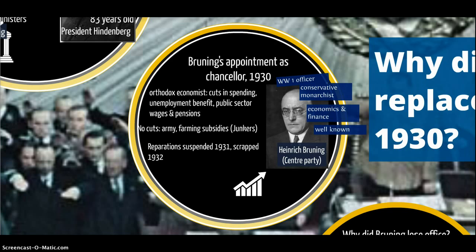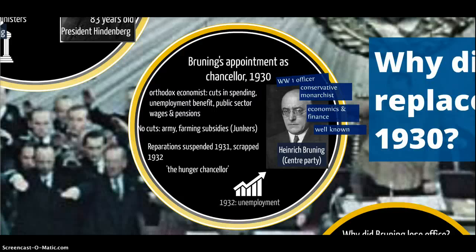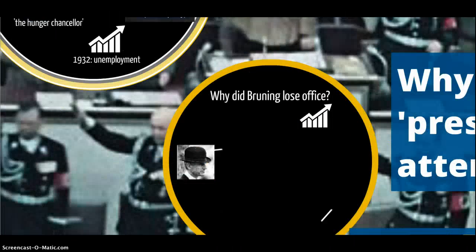Brüning did succeed in getting reparations suspended in 1931 and even scrapped in 1932. You might think that was incredible, but in the context of the economic chaos of the Great Depression, it's not that significant. He becomes known as the Hunger Chancellor — there's obviously a lot of suffering in Germany. Unemployed people have had their unemployment benefit cut, and there are a great many of them. Unemployment continues to rise, and in 1932 it's reaching huge proportions — six million unemployed.